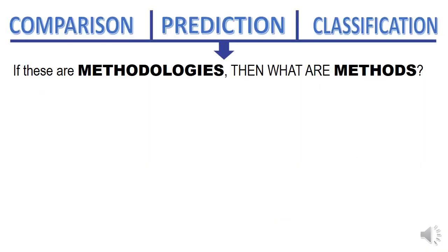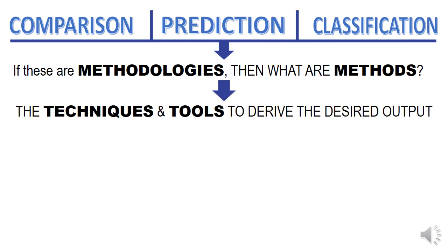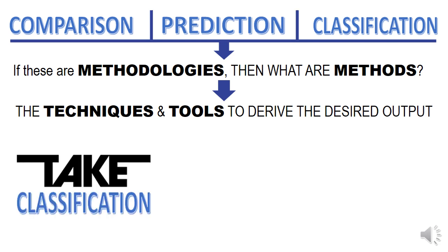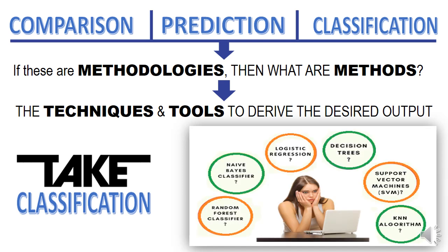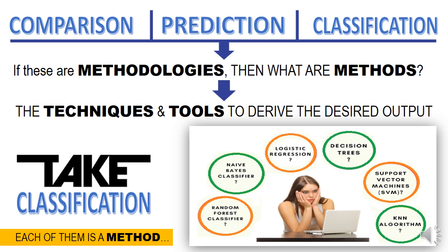If comparison, prediction, and classification are methodologies, then what are methods? Methods are those techniques and tools by which we can derive our desired output. Take classification as an example, and you suddenly get a slew of possibilities: random forest classifier, Naive Bayes classifier based on Bayes' theorem, logistic regression, decision trees, support vector machine, k-nearest neighbor algorithm. Each of them is a method by which we can implement the methodology called classification.